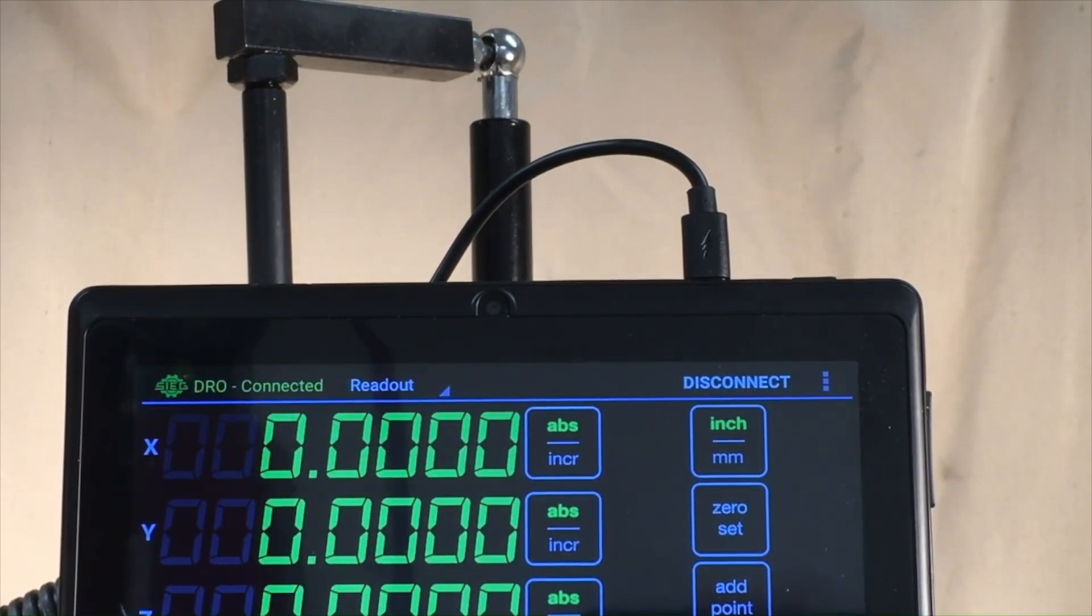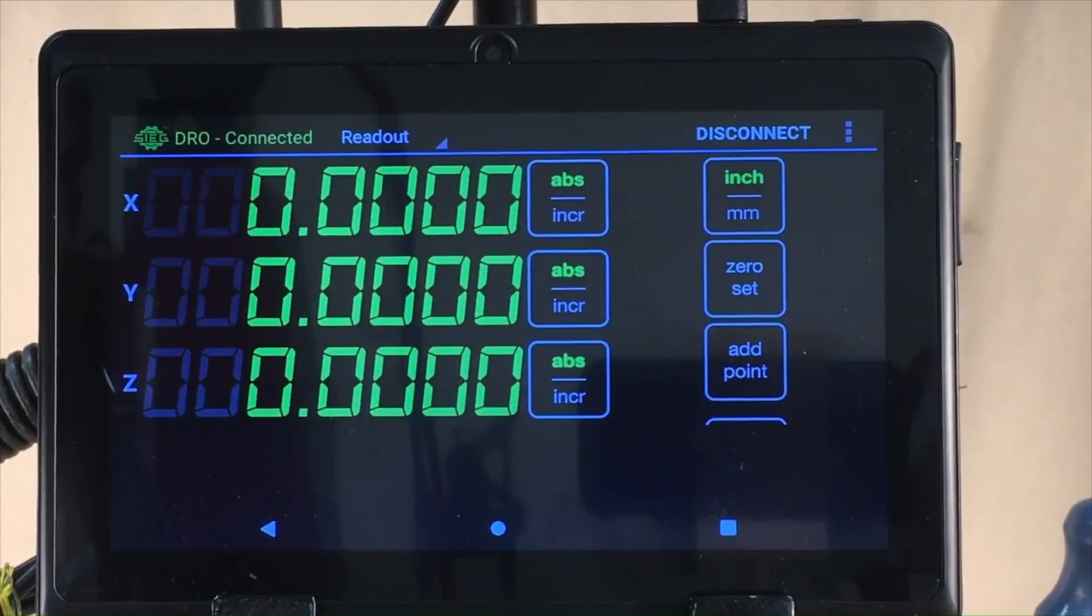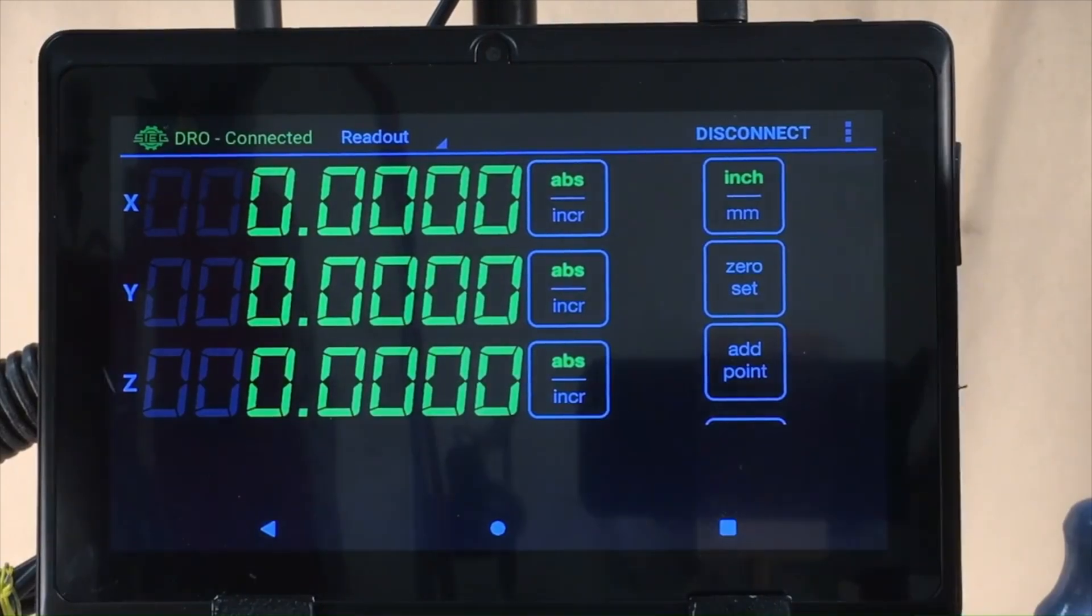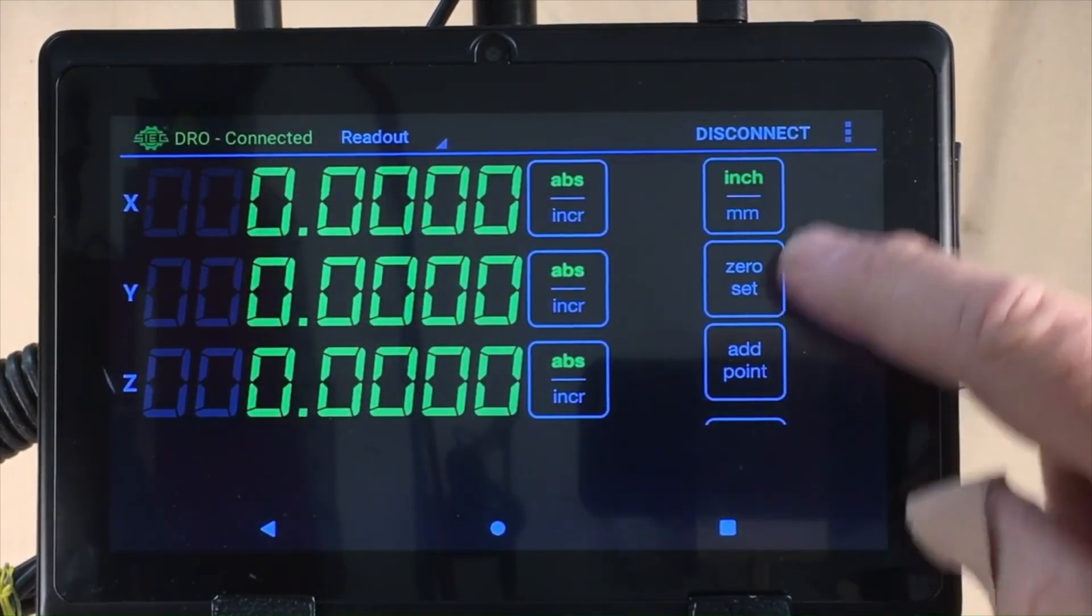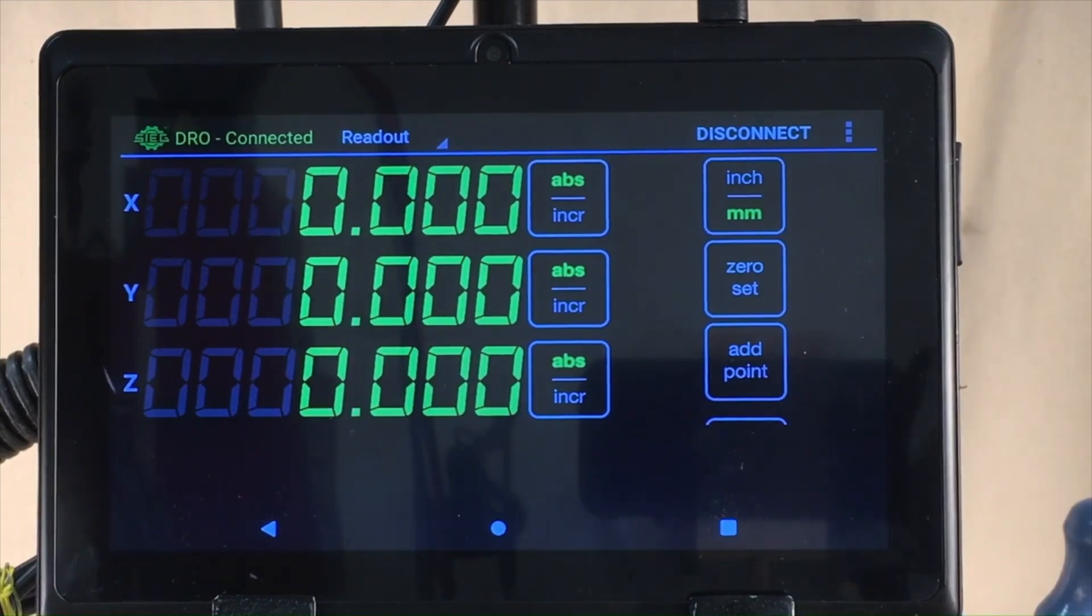I won't say much about the DRO right now because I'll do a more detailed description of that later in the review. But as you would expect, you can easily switch between inch and metric unit systems.